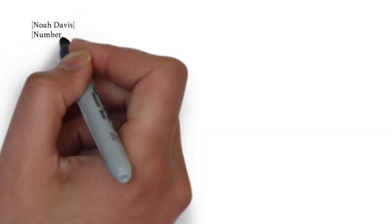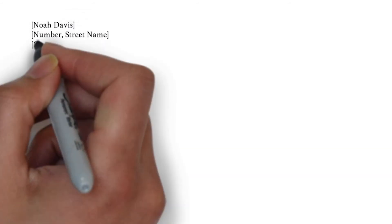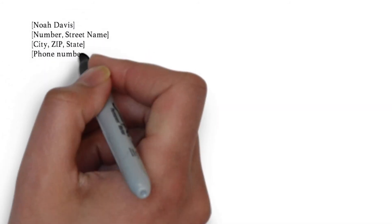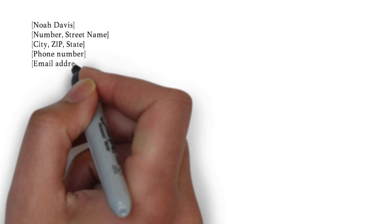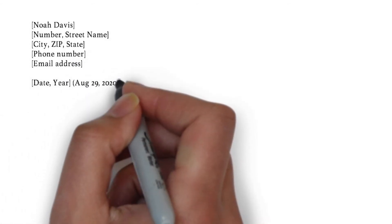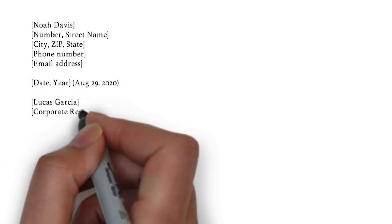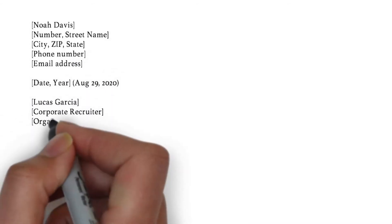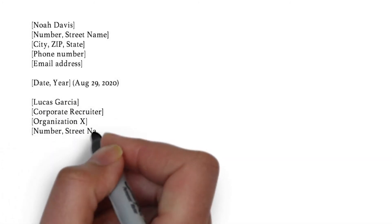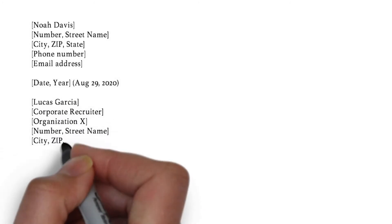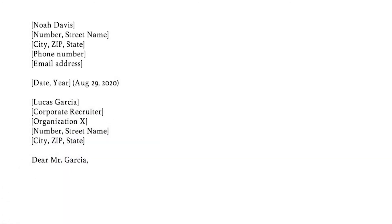We start off by listing our personal information on the left side. Then we enter the date between white lines underneath, followed by the recruiter's name and company information. As for the salutation, you can write 'Dear' or 'Greetings Mr. Garcia'. For American usage, include a dot after the abbreviation Mr., and for British English you can leave the dot out.